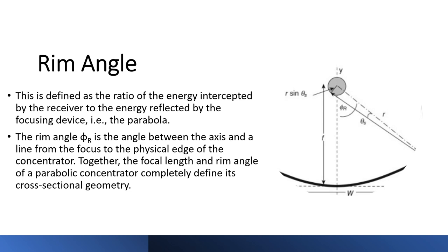Rim angle is defined as the ratio of the energy intercepted by the receiver to the energy reflected by the focusing device, i.e., the parabola. Or, the rim angle R is the angle between the axis and a line from the focus to the physical edge of the concentrator. Together, the focal length and rim angle of a parabolic concentrator completely define its cross-sectional geometry.